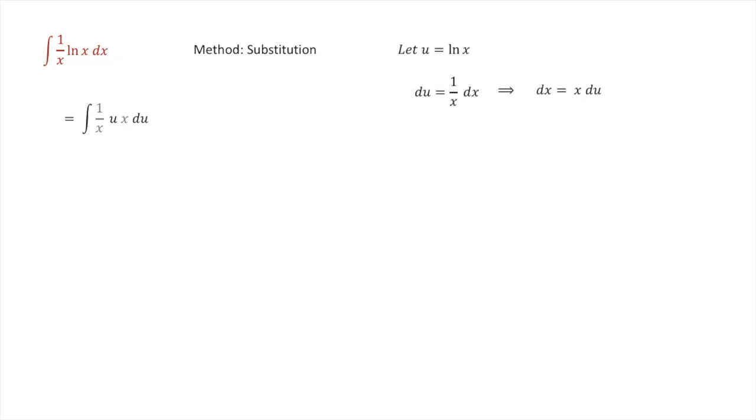So we have the integral of u du. Just normal integration we see that we get 1 half u squared plus c.